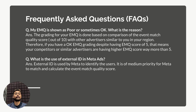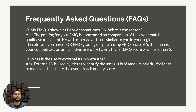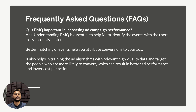Next question: what is the use of external ID in Meta ads? External ID is used by Meta to identify users — Meta clearly says sending external ID helps them identify users better. It is of medium priority for EMQ matching and calculation, but it's better to send it because not all events will have a click ID, which is of high priority.